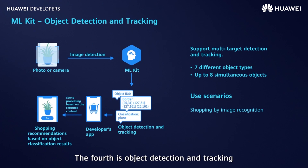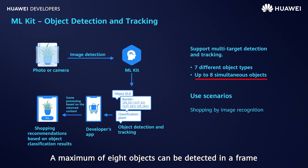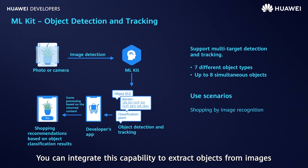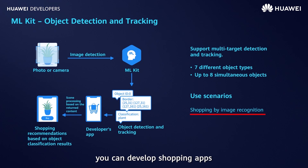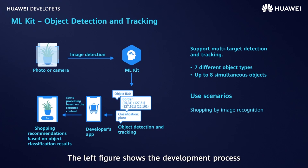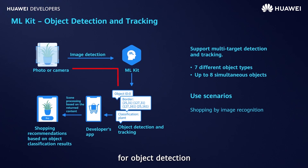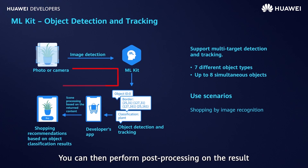The fourth is object detection and tracking. The capability can detect seven types of objects, such as furniture, plants, food, places, and people. A maximum of eight objects can be detected in a frame. You can integrate this capability to extract objects from images — for example, you can develop shopping apps in which users can search for a product by taking a photo of it. Images or video streams are input to the ML SDK for object detection, and you can then perform post-processing on the result.